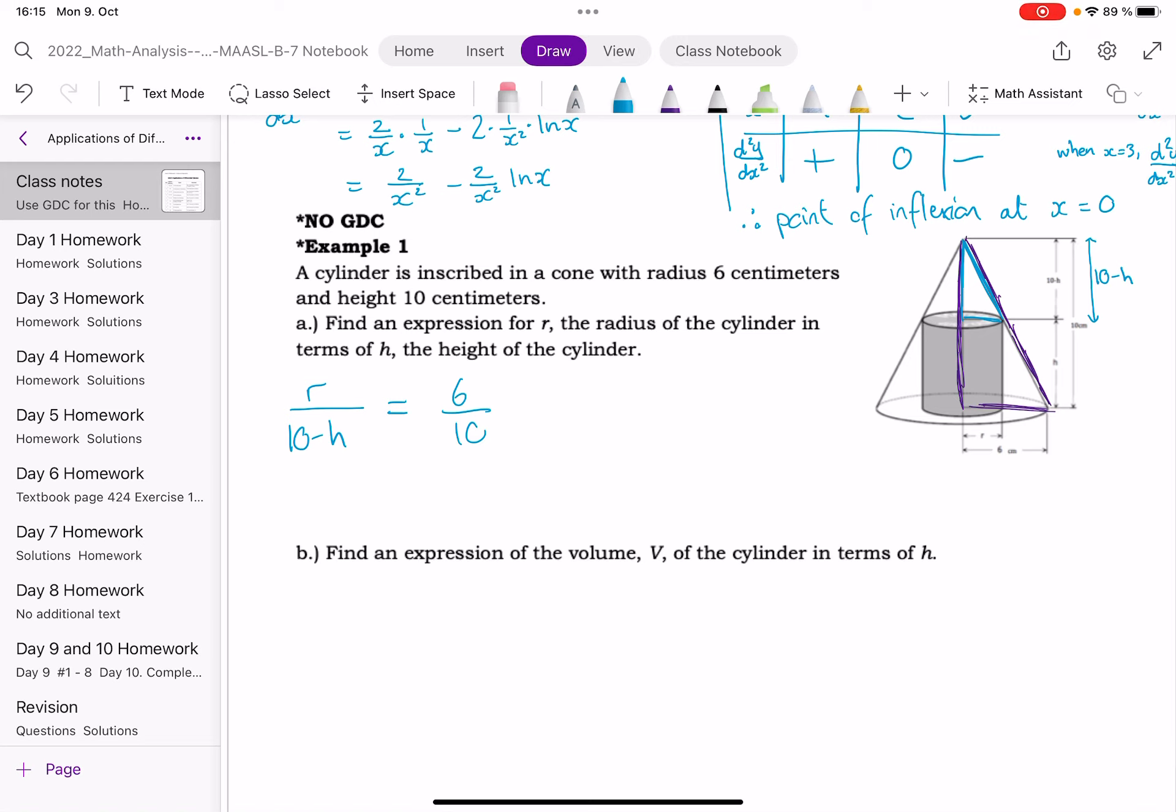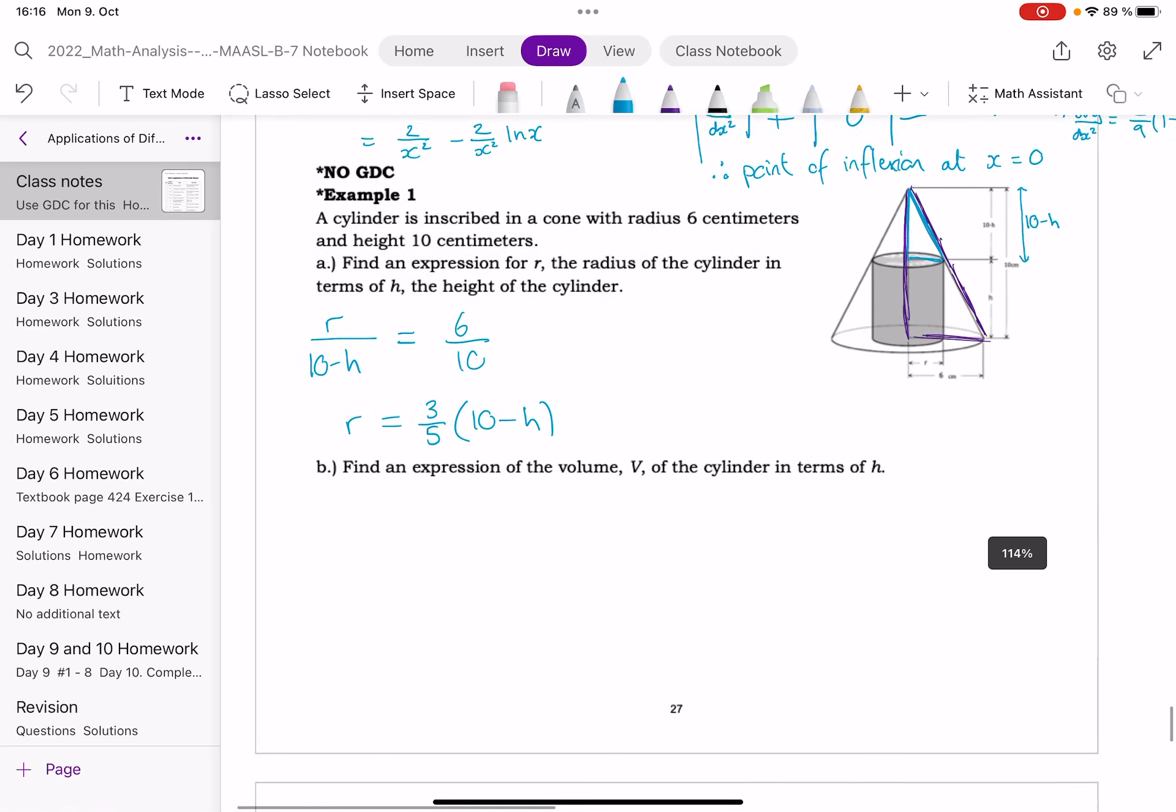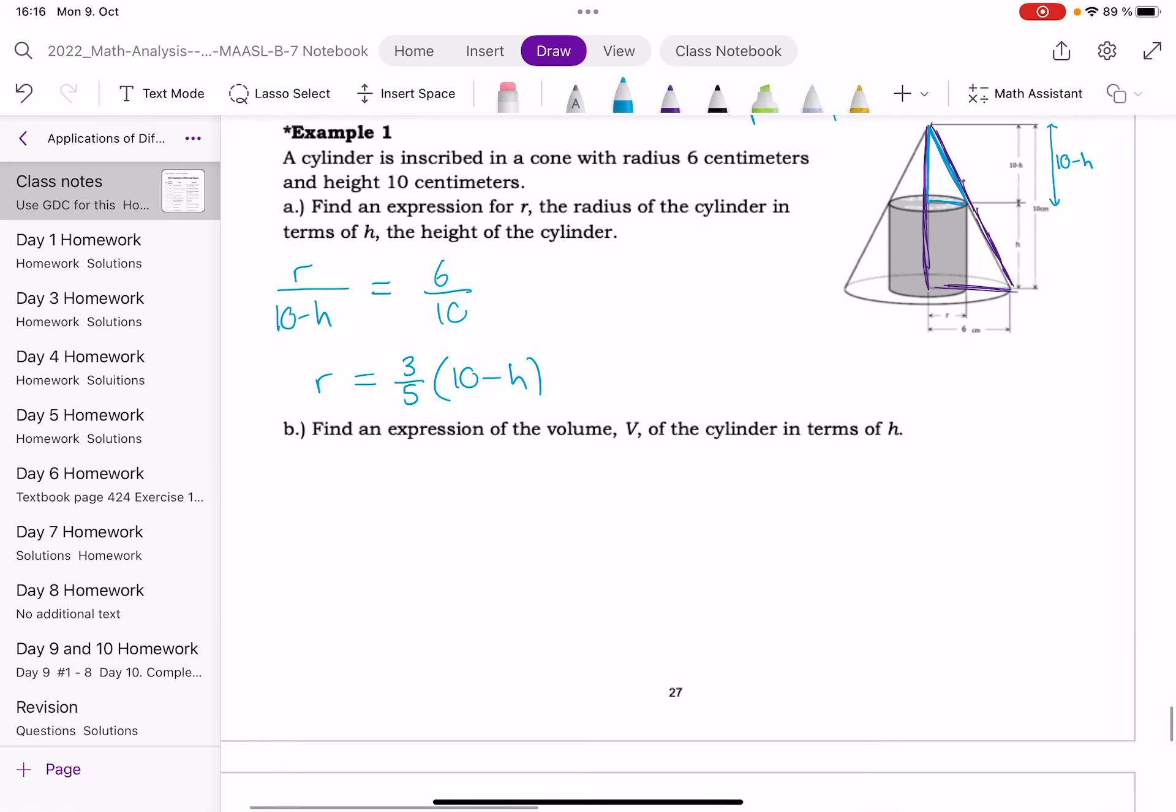So I want to find an expression for R in terms of H. So I want R on its own. And I'm going to multiply across by the 10 minus H. I think at the same time, I might simplify that fraction. So it's 3 fifths, 10 minus H. Okay, so that has got us an expression for R in terms of H. As this is an optimization question, I'm imagining I'll need to use that as a substitution later on.